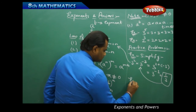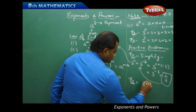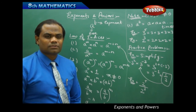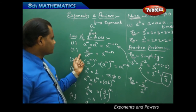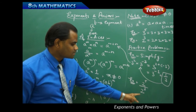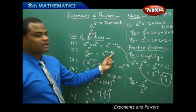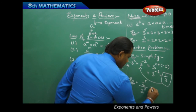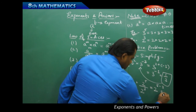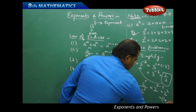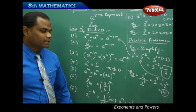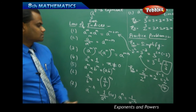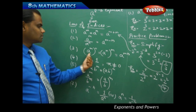Example 2: Simplify 2 power 5 divided by 2 power 3. Since the bases are equal under division, we apply the second law of indices and subtract the powers: 2 power (5 − 3) = 2 squared = 4. So the answer is 4.